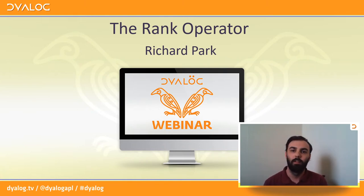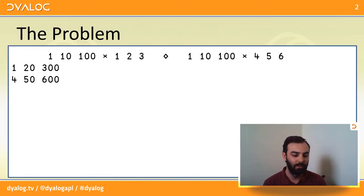To begin with, I'd like to show you a problem I've been having. It's quite a simple problem, I suppose, in APL, or at least simple to state. I have a three-element vector, 1, 10, 100, and I have two three-element vectors, 1, 2, 3, and 4, 5, 6. And I'd like to multiply my vector by each of my other vectors, as you can see here, expressed as two statements separated by a diamond.